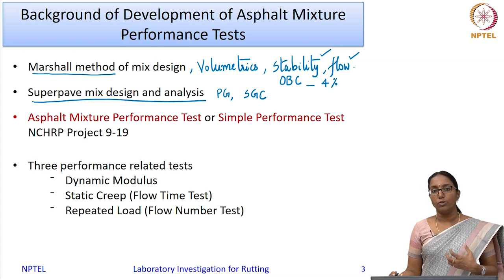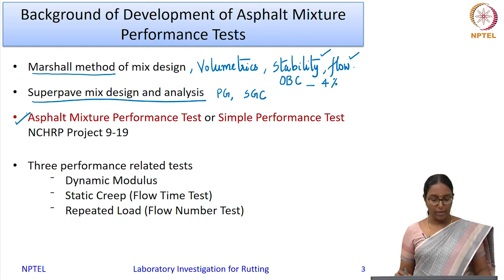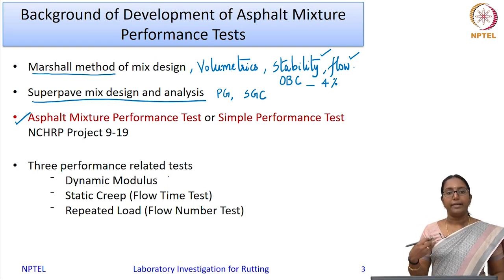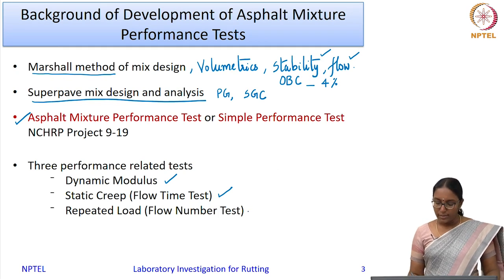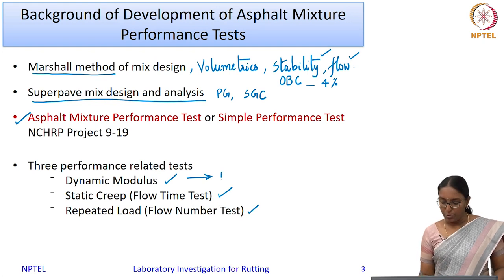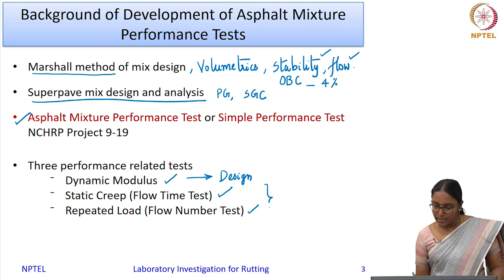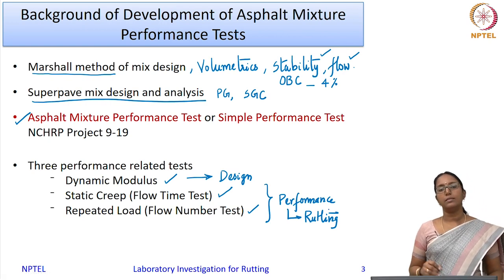In order to capture the response of the material in the field, asphalt mixture performance tests—also called simple performance tests—were developed as part of the National Cooperative Highway Research Program (NCHRP). Three tests were identified: the dynamic modulus test, the static creep test called the flow time test, and the repeated creep and recovery test called the flow number test. The dynamic modulus test determines the dynamic modulus for use in flexible pavement design, while the flow time and flow number tests are related to the rutting performance of the mixture.